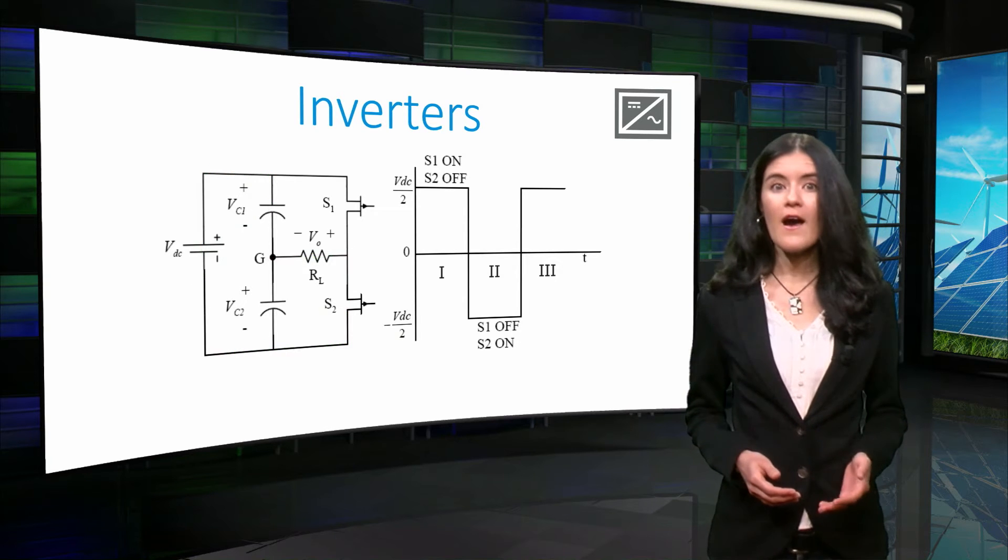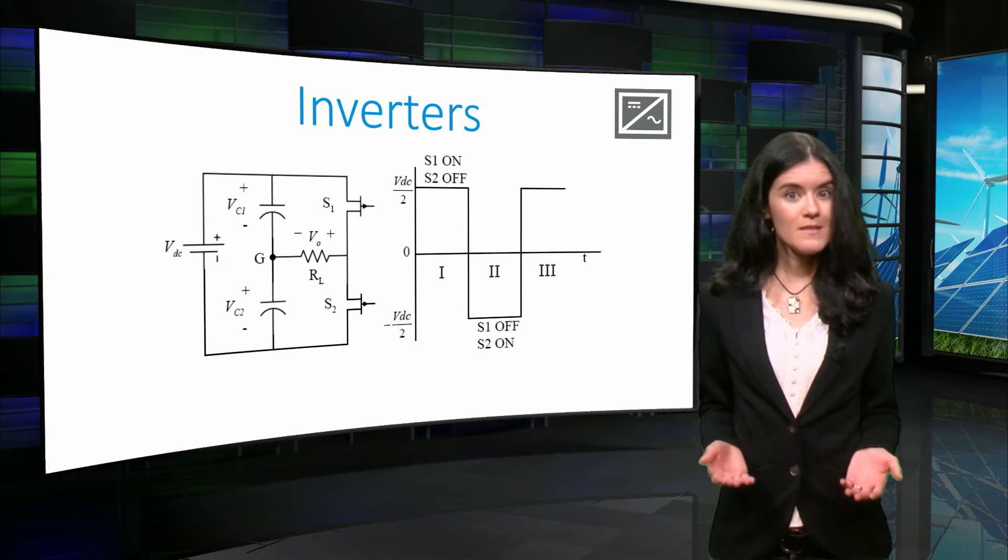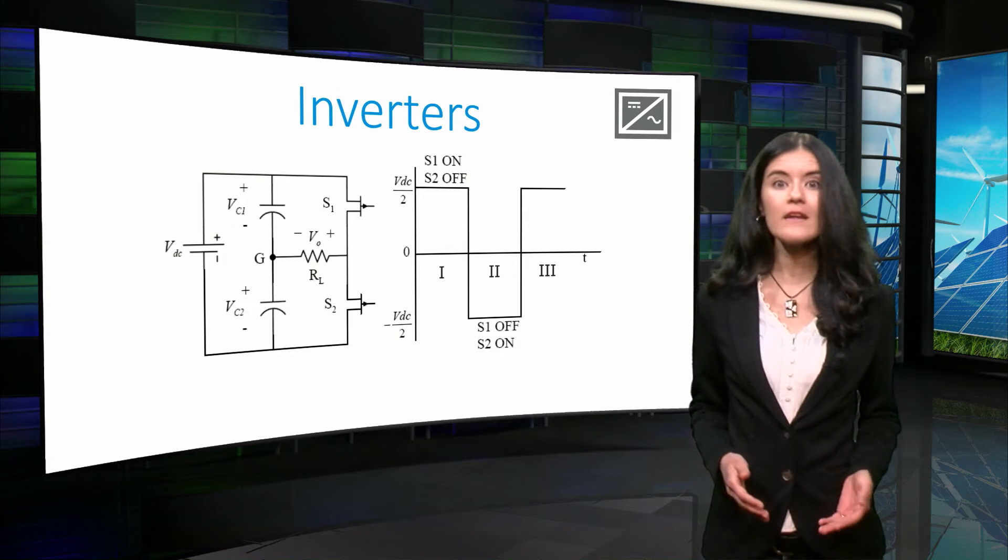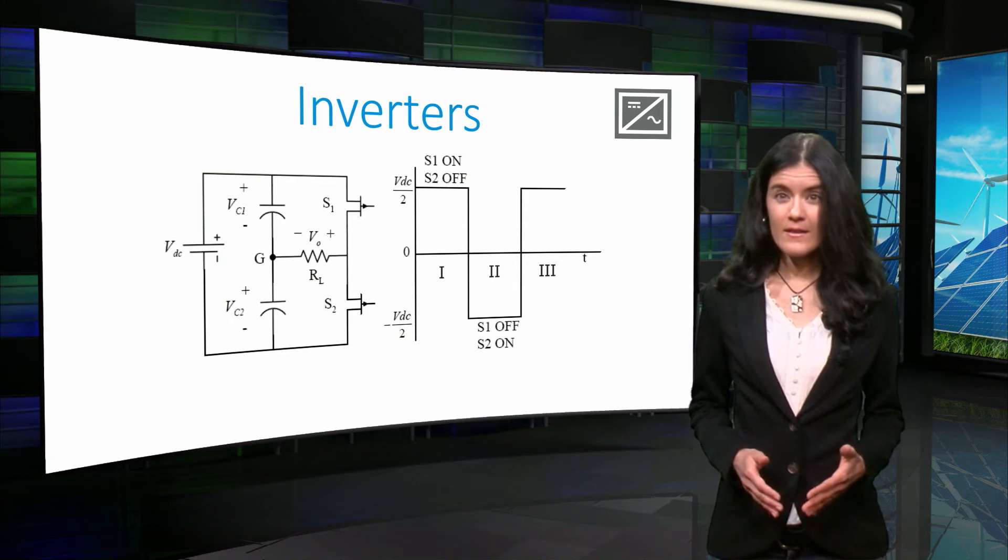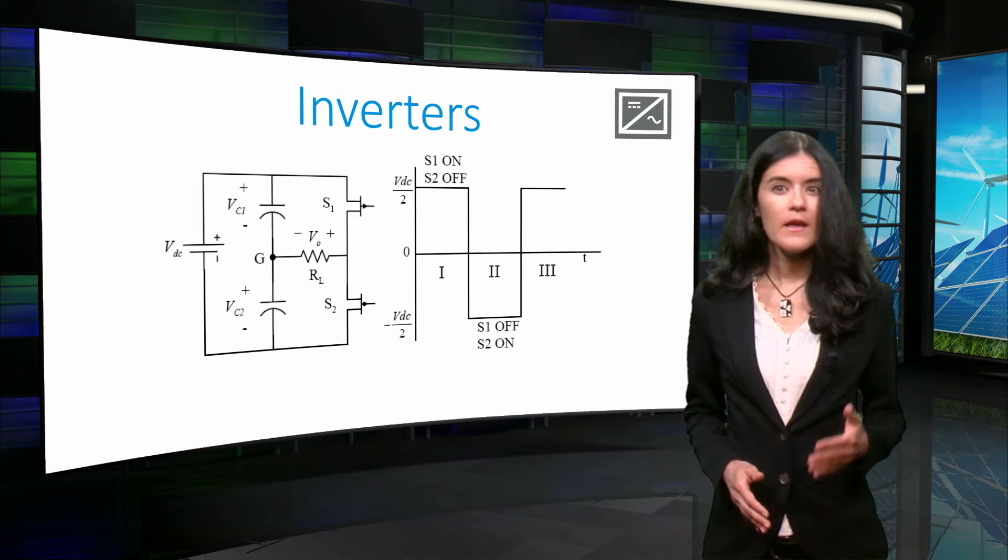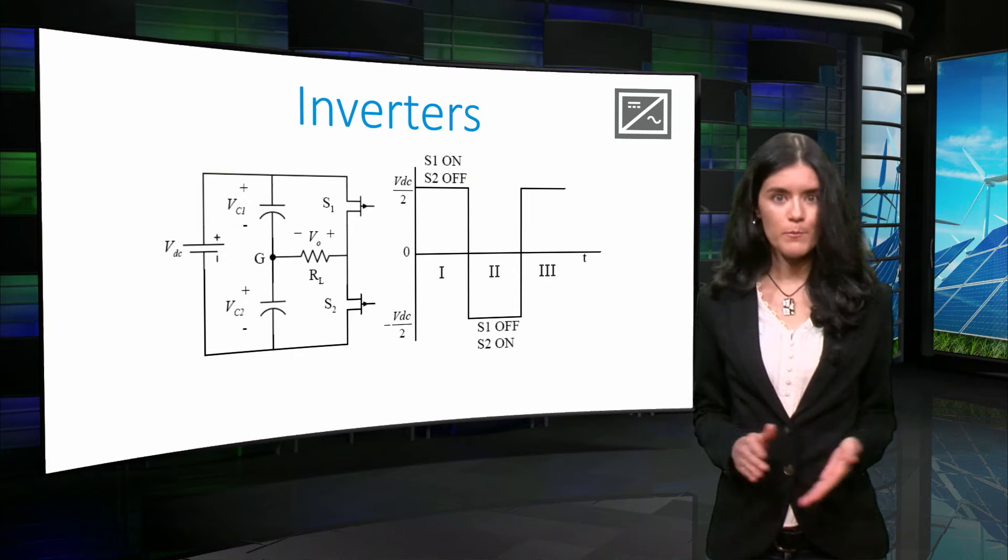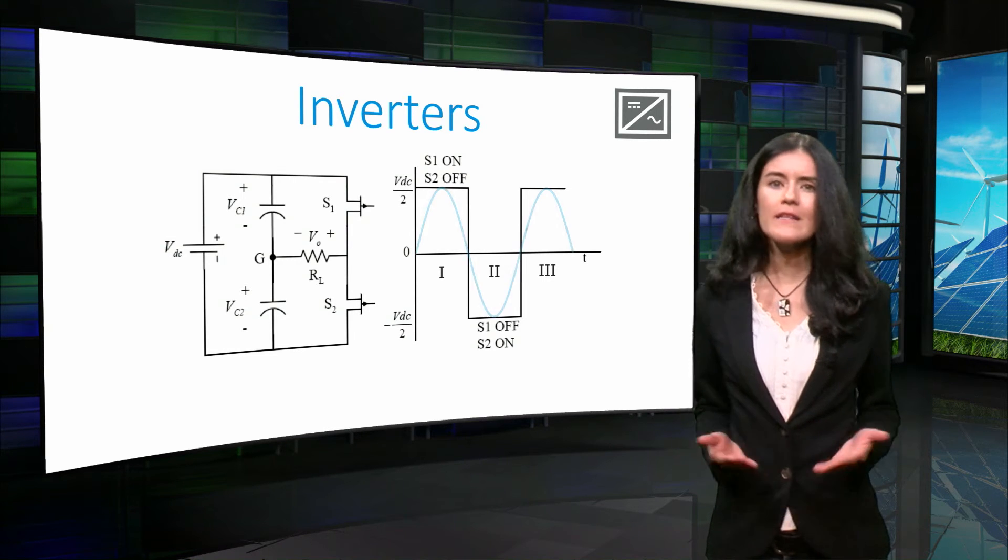When we look at the final output, we can see that the signal has a positive and a negative part, and that it is periodic. Even though this is far from a perfect sinusoidal wave, it resembles it.